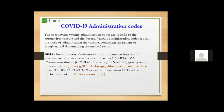CPT codes are typically numeric codes. Though these administration codes look like HCPCS codes, they fall under CPT categorization. So we need the administration code, but if the vaccine is from the government — given away for free — do we still need the vaccine CPT code?